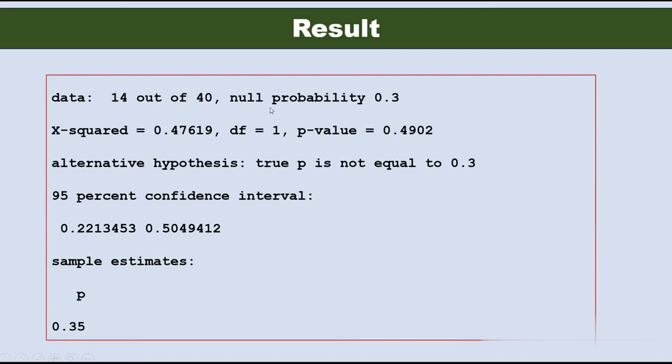In the result portion we see that the chi-square value is 0.47619 and the corresponding p-value is 0.4902. Since the p-value of the test is more than 0.05, that means we accept the null hypothesis and conclude that the proportion of the students investing in share markets do not differ significantly from 30 percent at 5 percent level of significance.